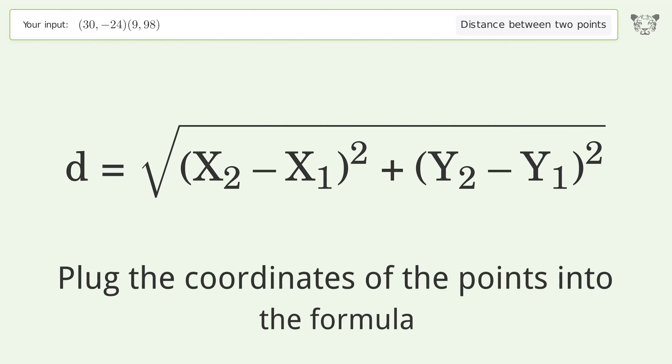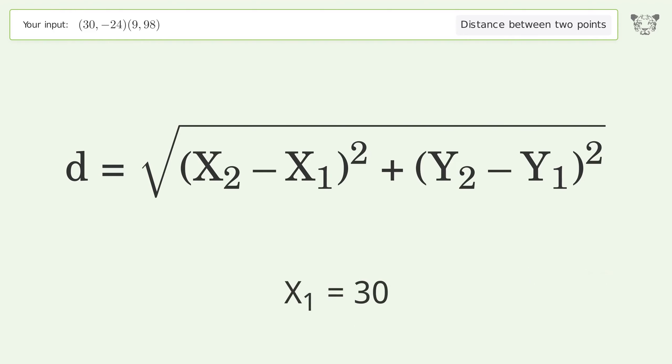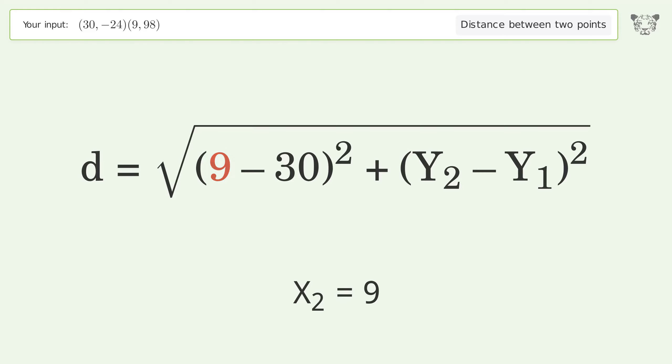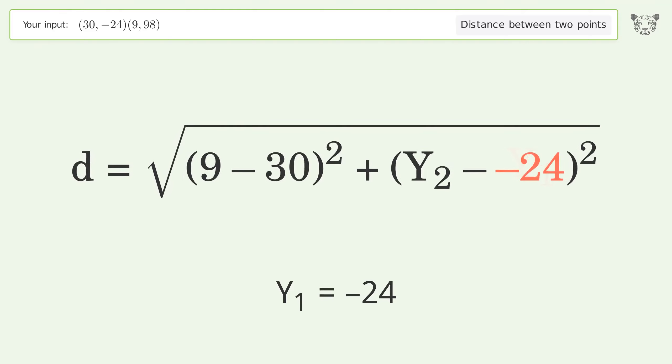Plug the coordinates of the points into the formula: x₁ equals 30, x₂ equals 9, y₁ equals negative 24, y₂ equals 98.